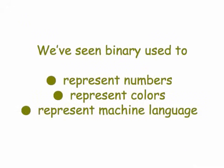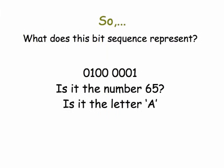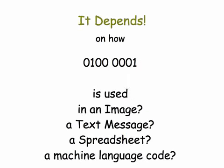We've had a couple of lessons now on binary numbers. We've seen binary used to represent numbers, represent colors, and represent machine language. So what does a given bit sequence represent? Is it the number 65? Could be. Is it the letter A? Could be. Is it the color magenta? Could be. It depends — it actually depends on how that number is used in the computer. Is it in an image file? A text message? A spreadsheet? Part of machine language code? As these examples show, it's all bits, and how you interpret a sequence of bits depends on how that sequence is used.